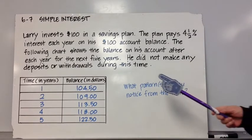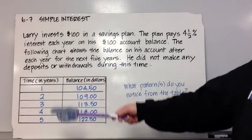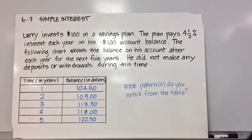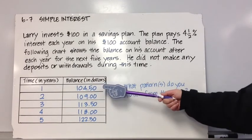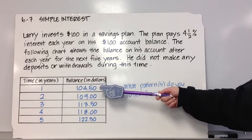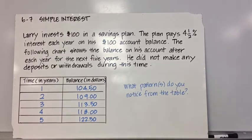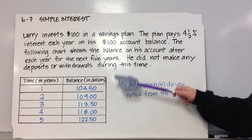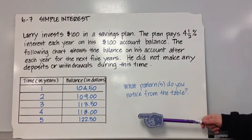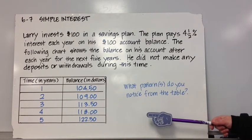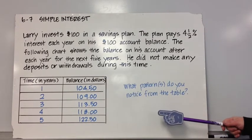So what I want you to do is look at this table. It shows the time in years and the corresponding balance in dollars in Larry's account. I've shown all 5 years and the respective balances. So look at this table and just study it.